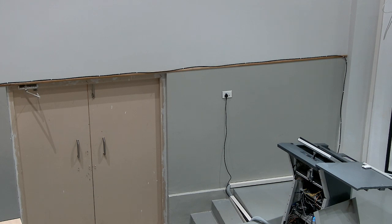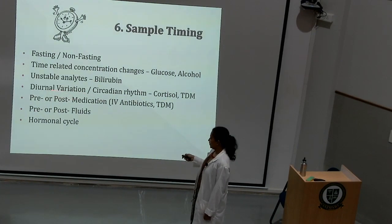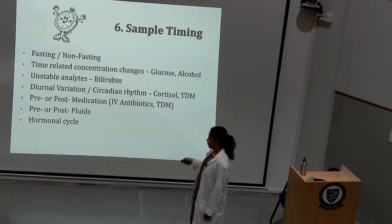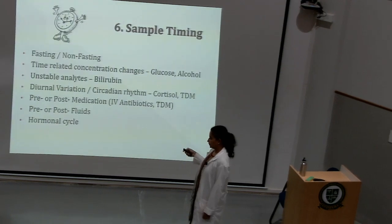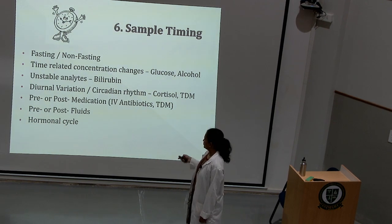There can be diurnal variation or circadian rhythm effects on certain analytes such as cortisol, so when you receive a request for cortisol estimation, check the time. Therapeutic drug monitoring and the influence of certain drugs on lab tests are also important — pay attention to whether the patient has already taken medication or IV fluids. You also need to consider the hormonal cycle, especially when performing hormone analysis in cases of infertility, and know whether the patient is in the proliferative or secretory phase of the menstrual cycle.